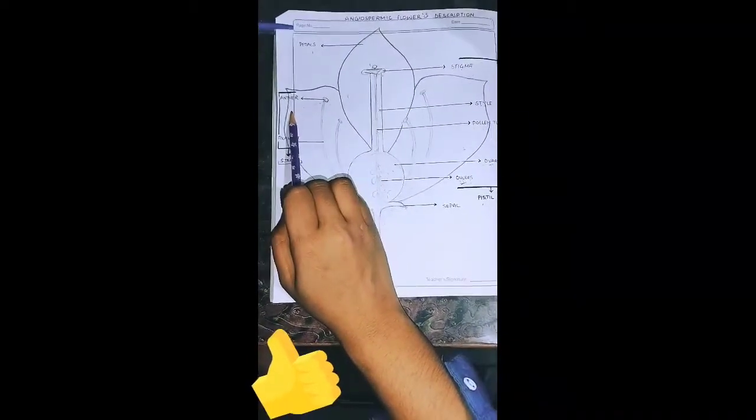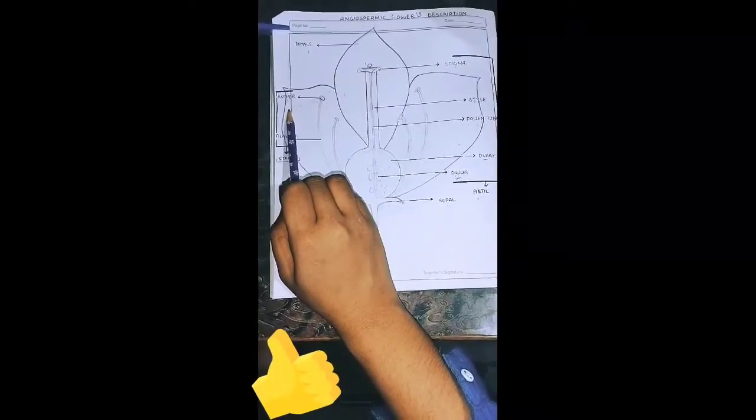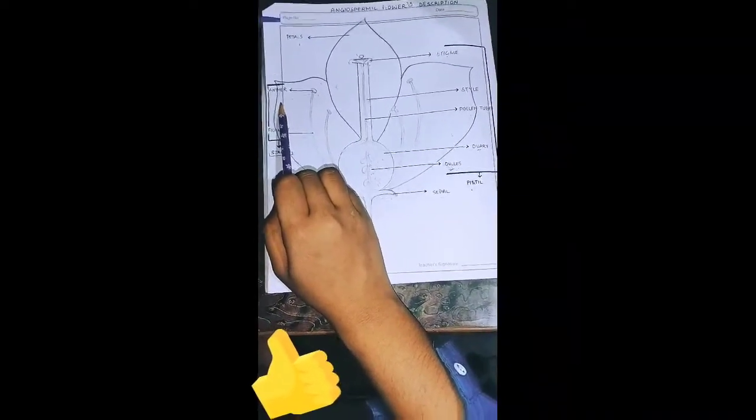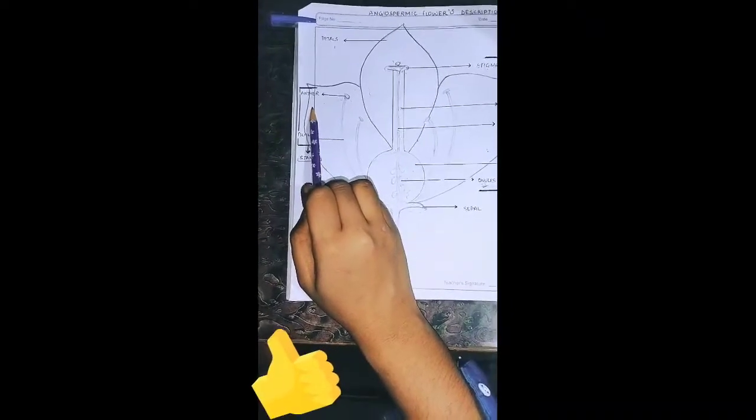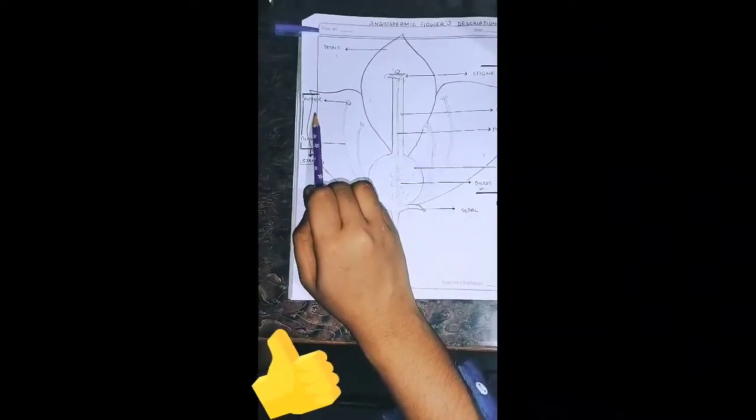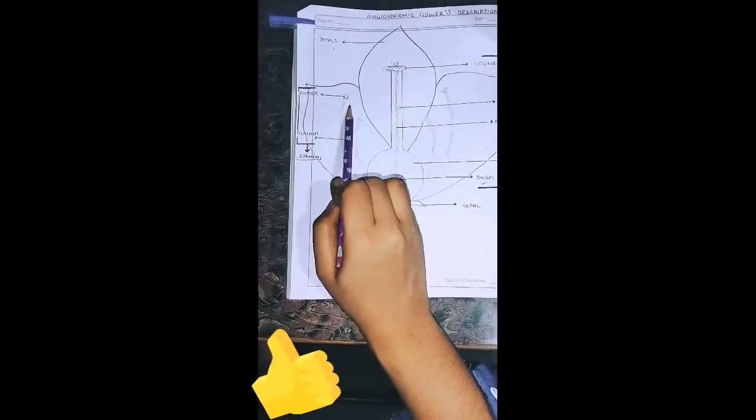So, anther is the main system in which our pollen grains or male gametes develop. Basically, anther consists of pollen sacs and these pollen sacs are responsible for the development of pollen grains.